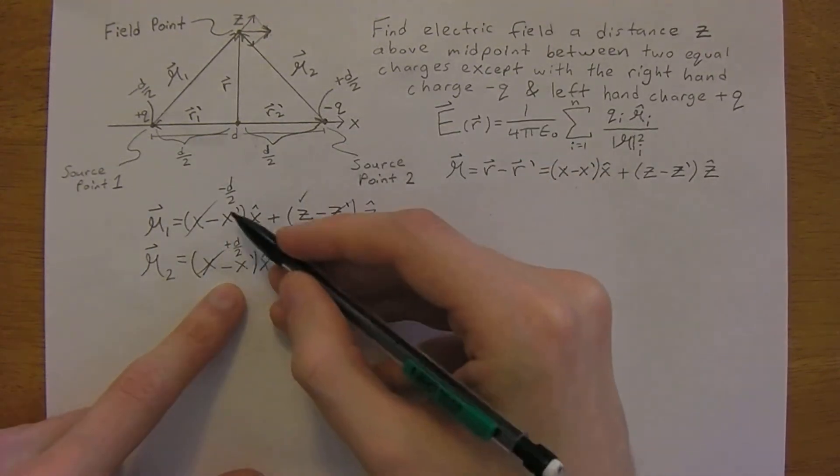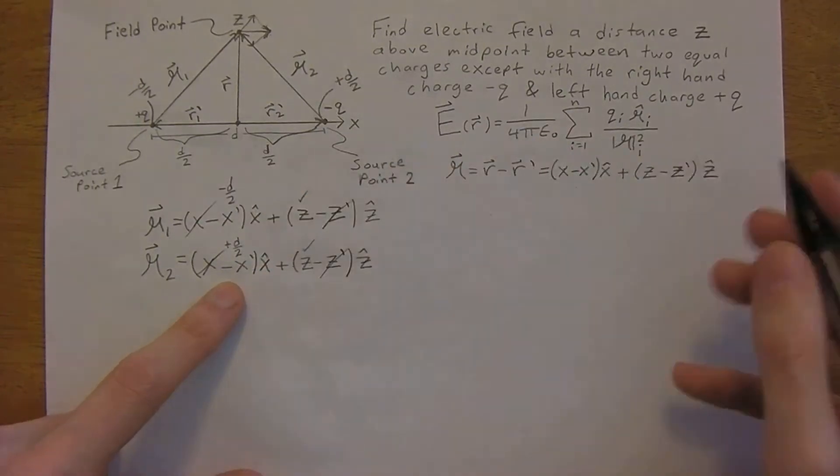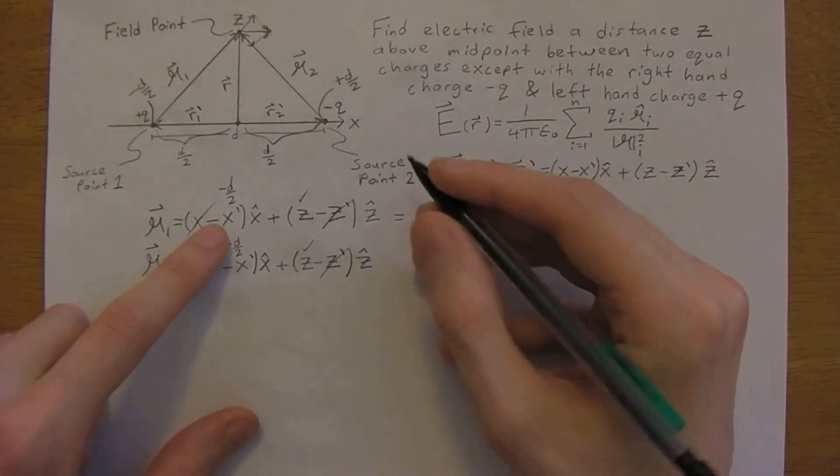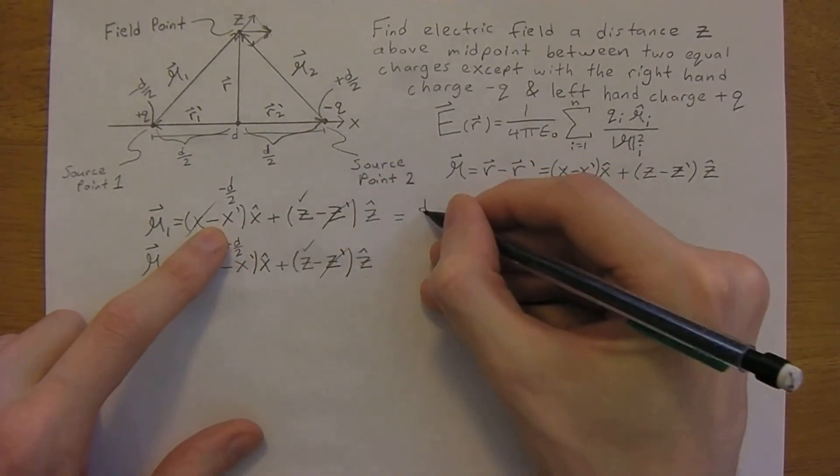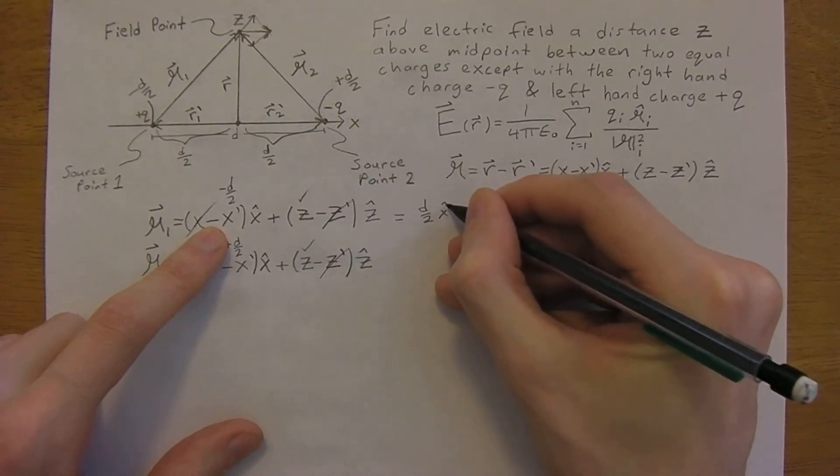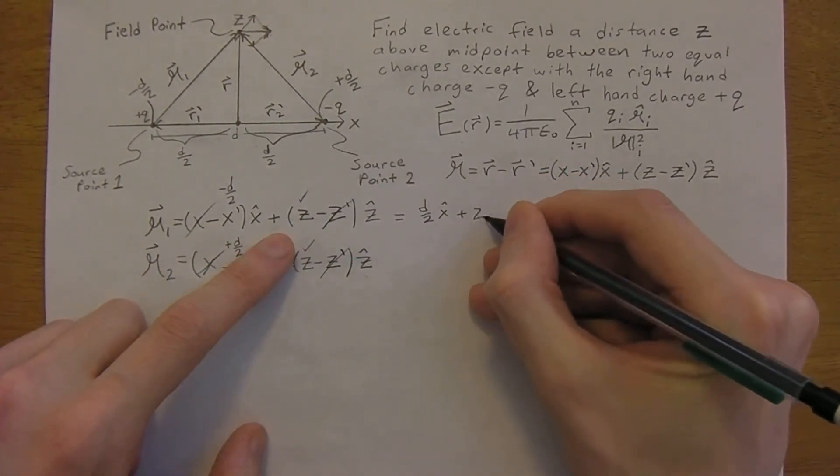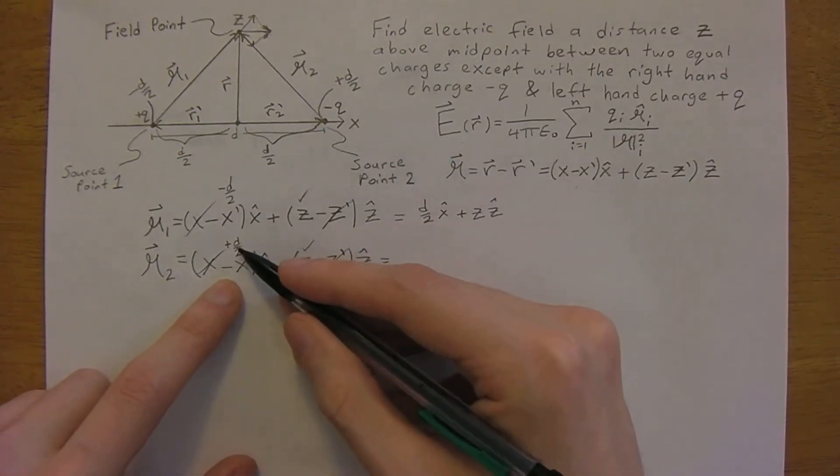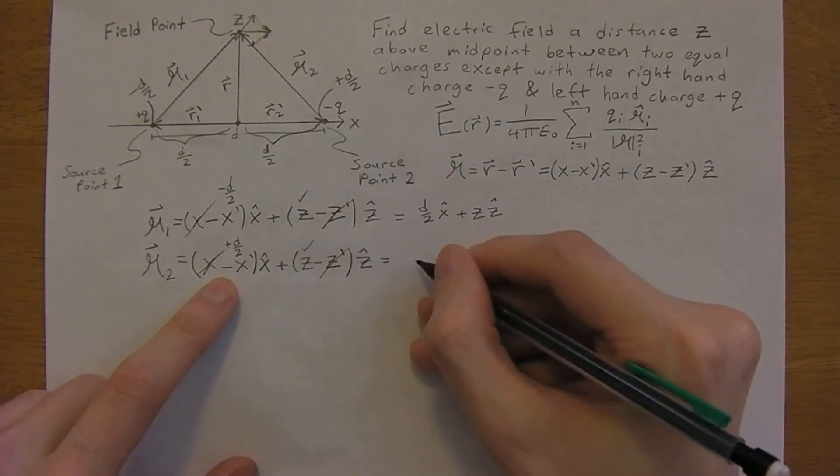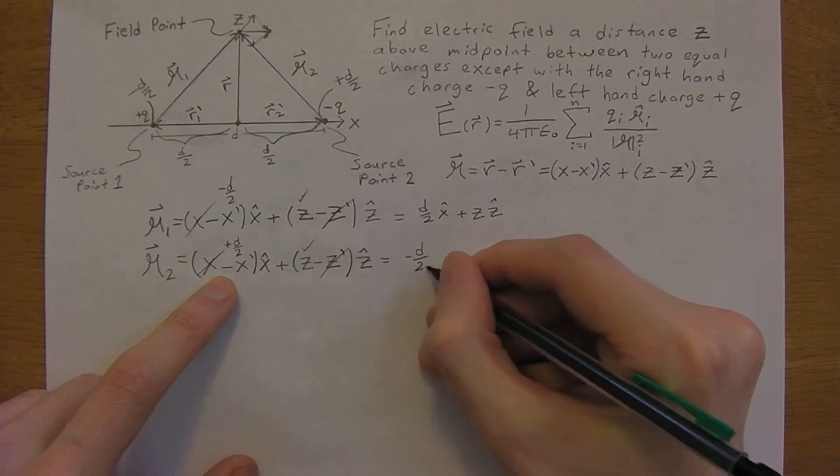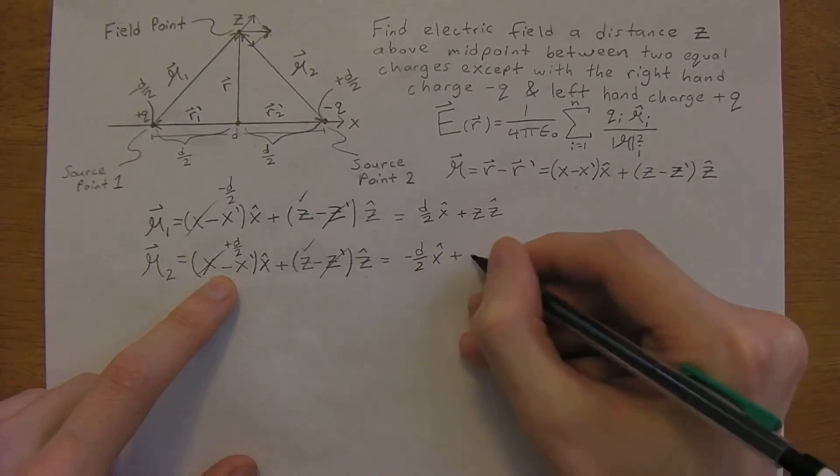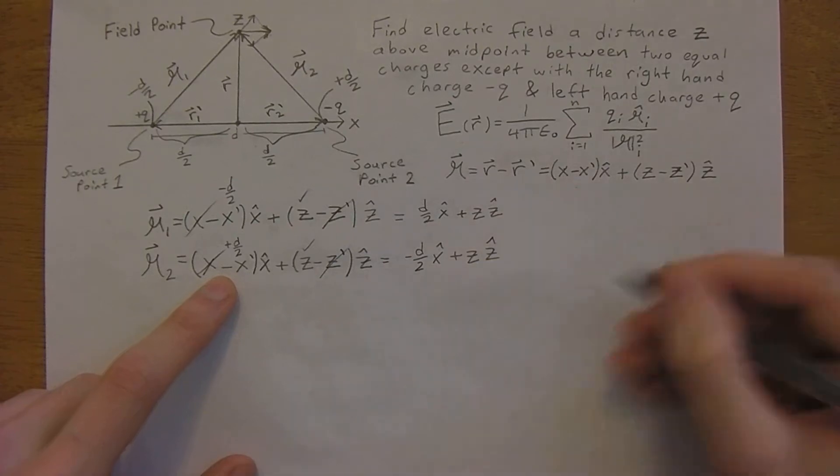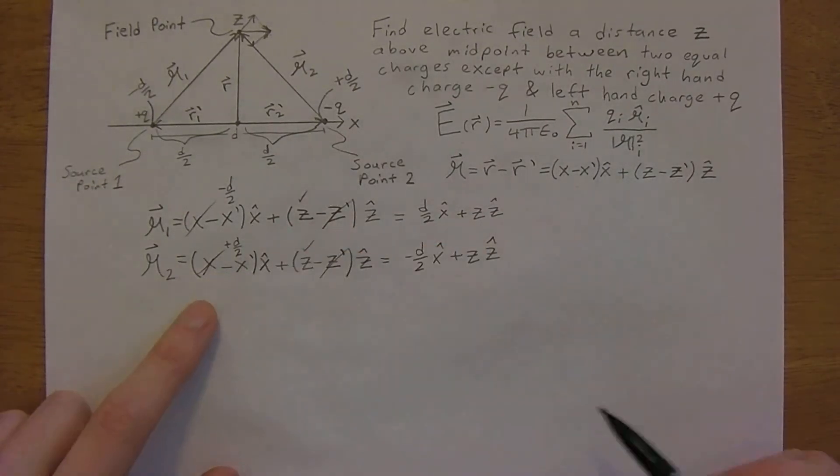Okay, now we just need to keep our signs steady. So r1 is equal to, these two negatives will cancel, d over 2 x hat plus z z hat. And then this will be positive d over 2 but we have a negative there, so negative d over 2 x hat plus z z hat. If your answer doesn't work out, usually you may have some sort of sign convention somewhere.